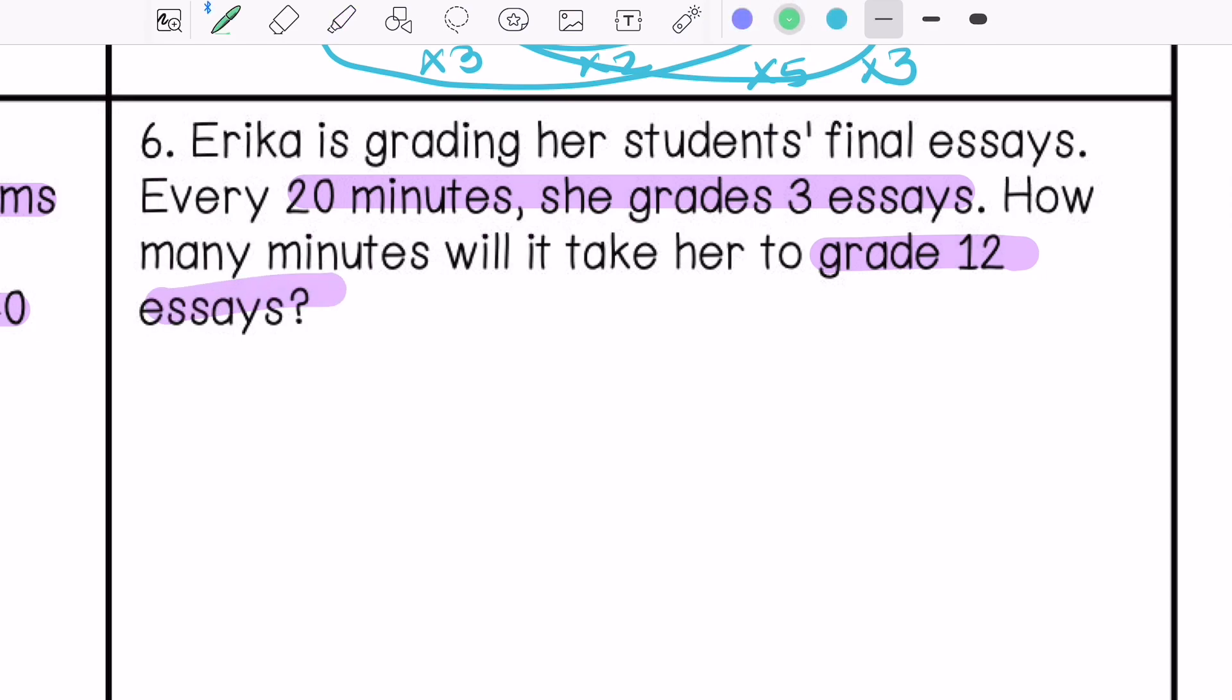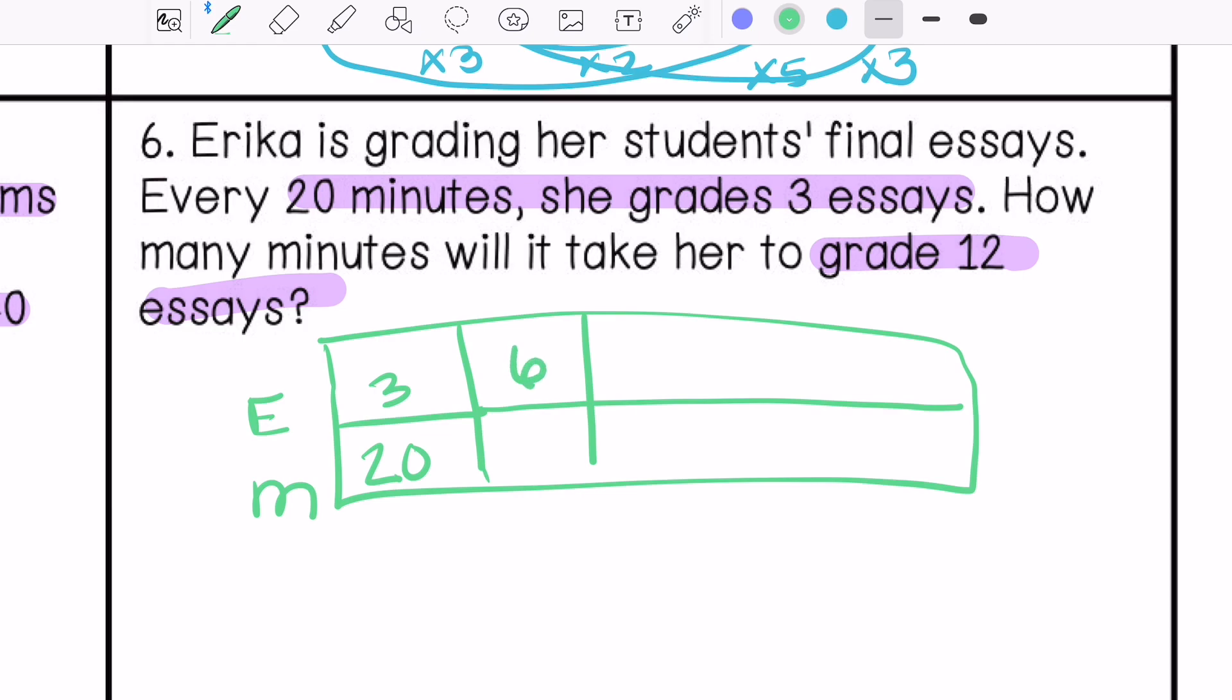We have essays and minutes. 20 minutes, three essays. Three times two is six essays, that would be 40 minutes. Three times three is nine essays, that would be 60 minutes. And three times four is 12 essays, and that would be 80 minutes.